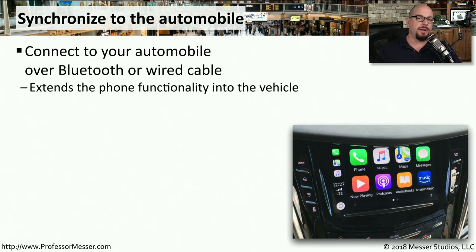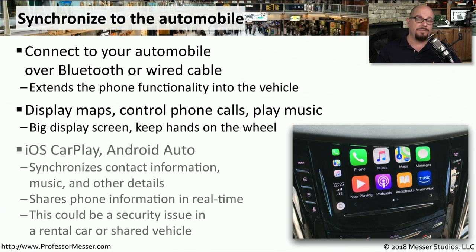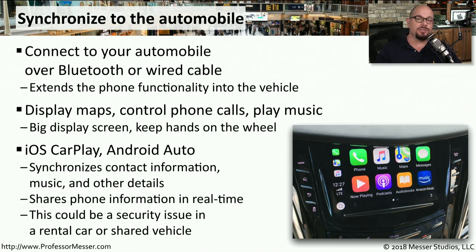We spend a lot of time in our cars, and our automobiles are becoming more aware of our mobile devices. You're now able to plug in a cable or use Bluetooth to extend your phone functionality into the car itself. Many cars can also provide additional enhancements that allow you to share contact information, view maps, play music, and perform other functions from your mobile device. If you have an iOS device, your car may be able to use iOS CarPlay. Android has a similar feature called Android Auto. By using these enhanced features, our car is now able to see our contact list and integrate and control our phone, all from the car's console.